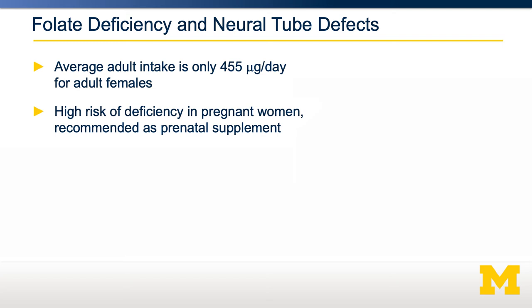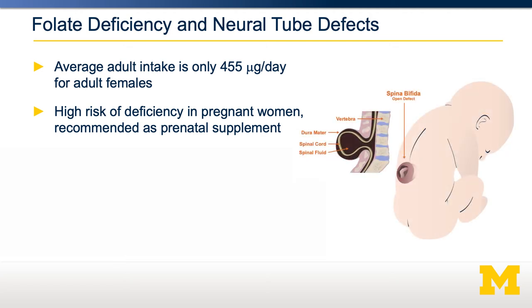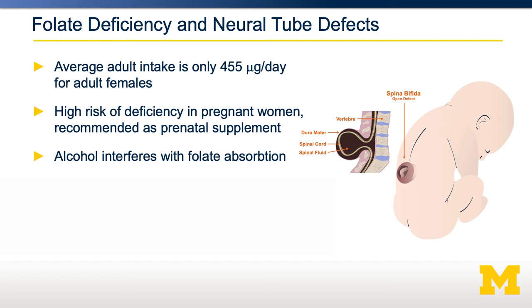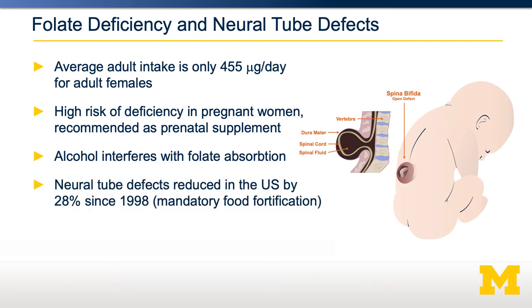One thing noted with folate deficiency is its association with neural tube defects, which involves the improper closure of the neural tube during development — a process requiring substantial methylation products. This is one reason why folate is recommended as a prenatal supplement. Additionally, alcohol interferes with dietary folate absorption, so chronic alcoholics tend to have lower circulating levels of folate. In 1998 in the United States, folate became part of mandatory food fortification, and since then neural tube defects have been reduced by 28% — largely considered a public health success.